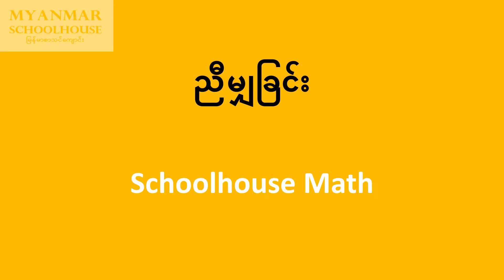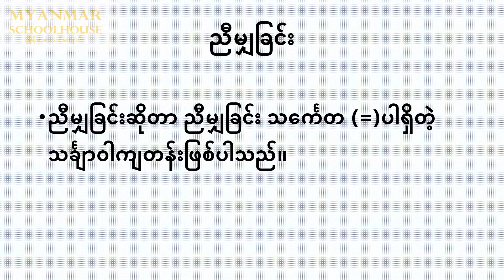In other words, we have schoolhouse math in the schoolhouse. The algebraic equation is the equation to achieve 6,000 in total.